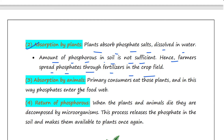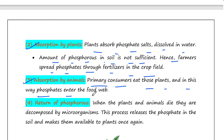The next stage is absorption by animals. Primary consumers like cows and goats eat those plants, and in this way phosphates enter the food web.